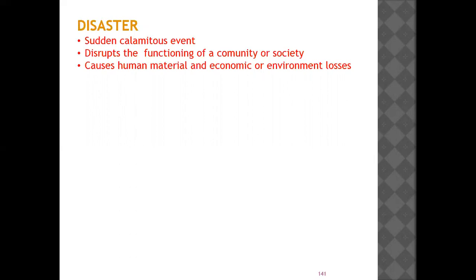Regarding cyclones, India is surrounded by sea on two sides and ocean on another — meaning three sides of our country are covered by water. India has a coastline of 5,700 kilometers which is exposed to tropical cyclones arising in the Bay of Bengal and the Arabian Sea. Cyclones usually occur between April and May and also between October and December.